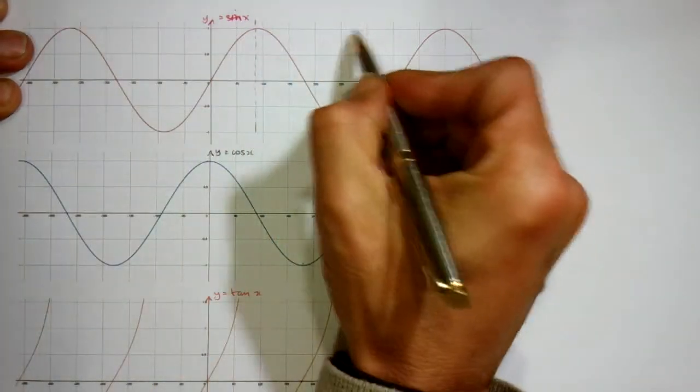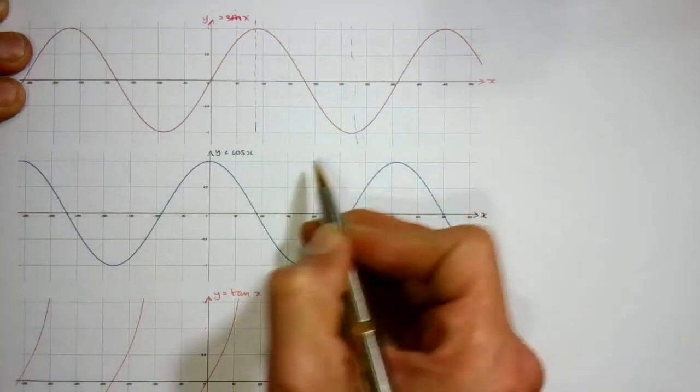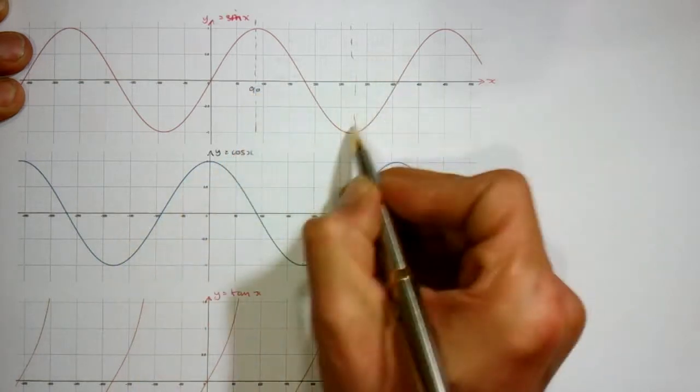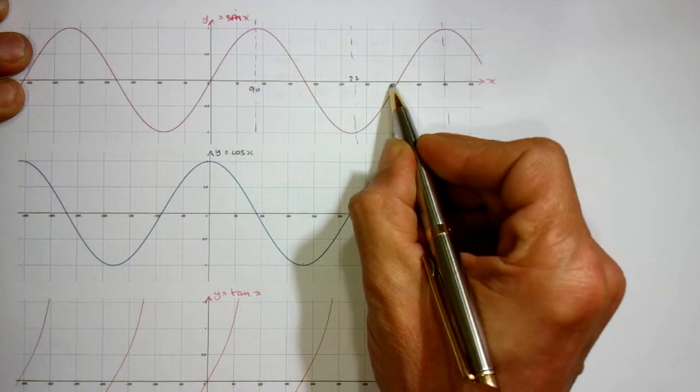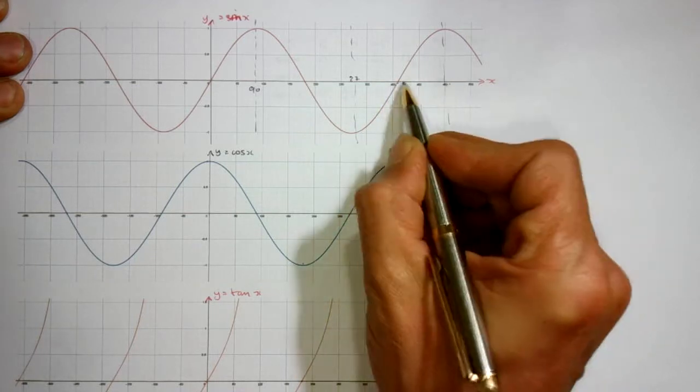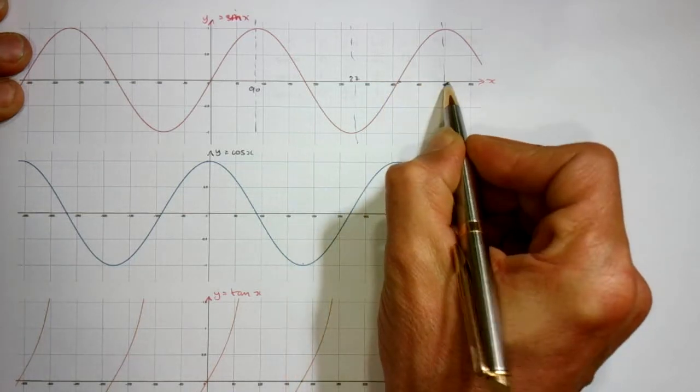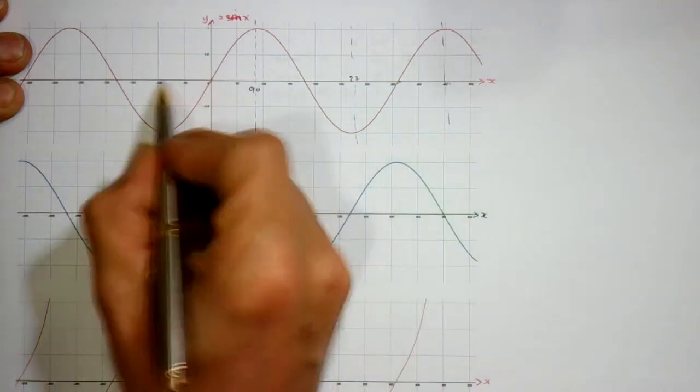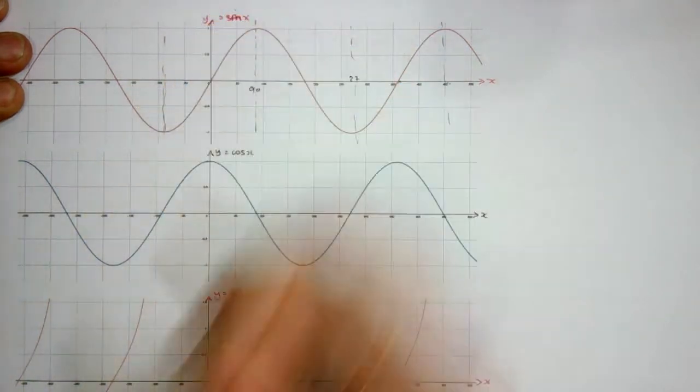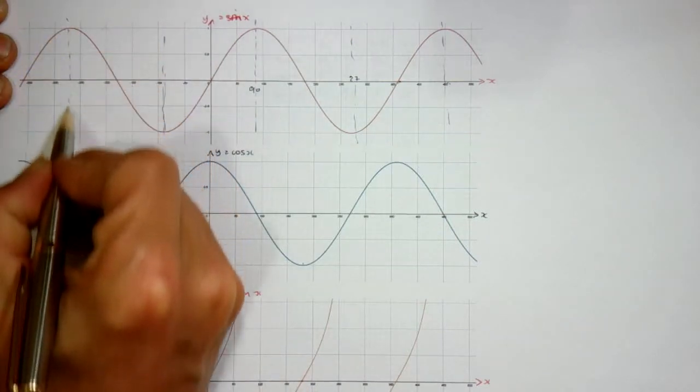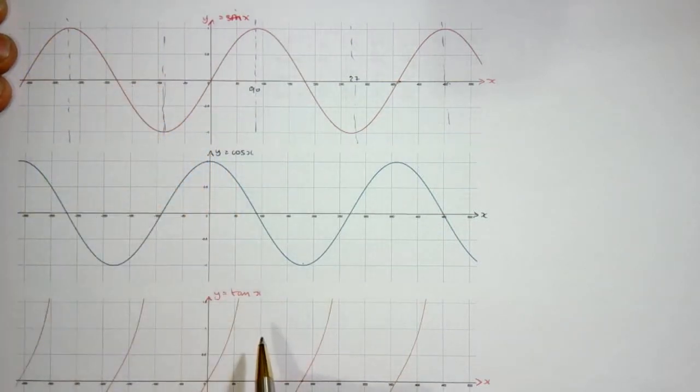And the same at this point, so this is 90, this is 270, happens again at 90 more than 360, which is 450, and so on. On the left-hand side, on the negative side, we've got minus 90 line of symmetry, another line of symmetry at minus 270, and so on.